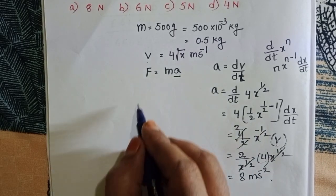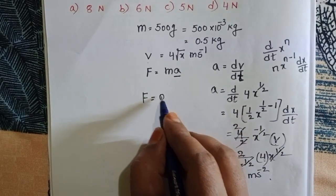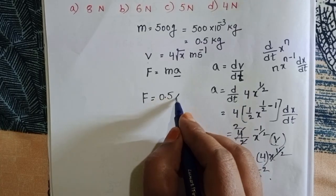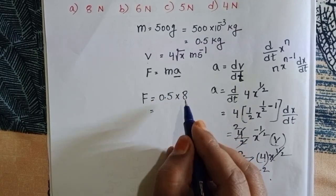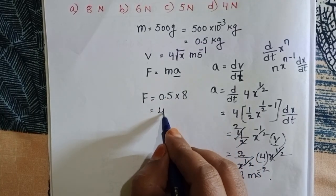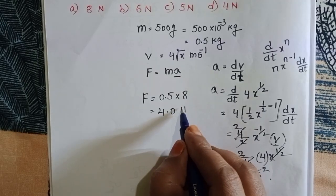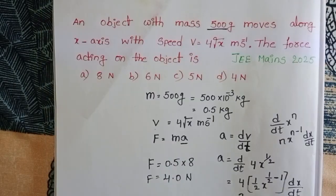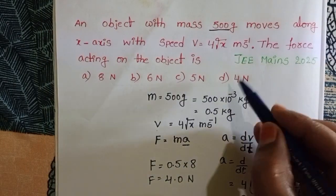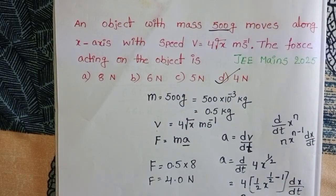Now calculate the force. F equals mass times acceleration: 0.5 times 8 equals 4. So, 4.0 newtons. The force acting on the object is 4 newtons. The fourth option is correct.